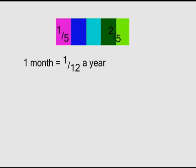Every one month is one over twelve of a year, because there are twelve months in a year. If you score ten percent in an exam, it simply means you score ten marks out of the possible one hundred, so the fraction is ten over hundred.